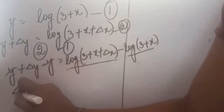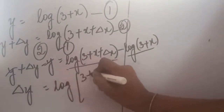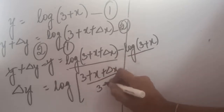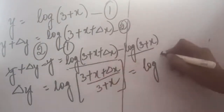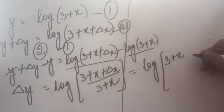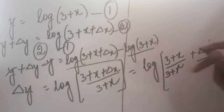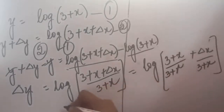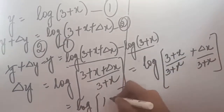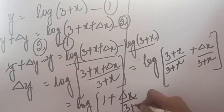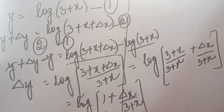On the left hand side this will be deducted, so delta y equals — now taking the log property — it can be written as log of (3 + x + delta x) divided by (3 + x). We can divide this internal part into two parts: (3 + x) kept separate and delta x kept separate, dividing both by (3 + x). So we can write it as log of 1 plus delta x divided by (3 + x). By this I have taken one common because I wanted to apply the binomial theorem or another principle.